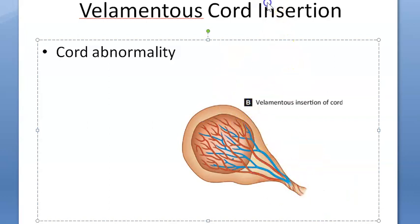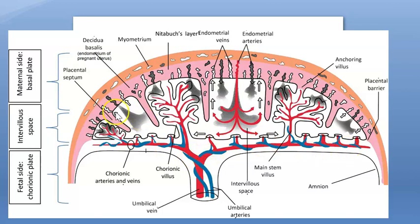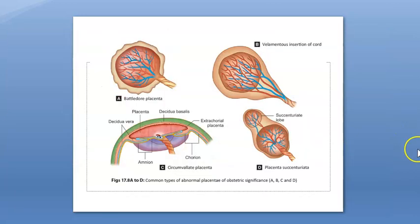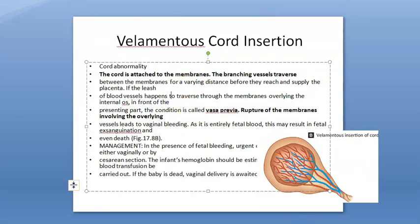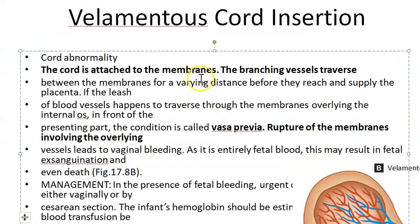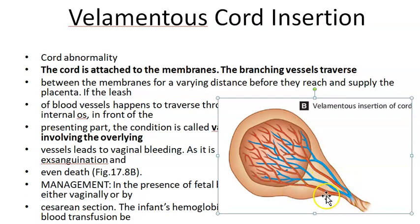In a normal insertion you can see the vessels are well within the placenta. But in velamentous cord insertion, the cord is attached to the membranes, and the branching vessels travel between the membranes for a varying distance before they reach and supply the placenta — they are not going directly to the placenta.